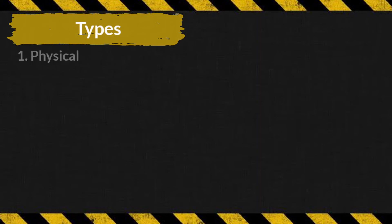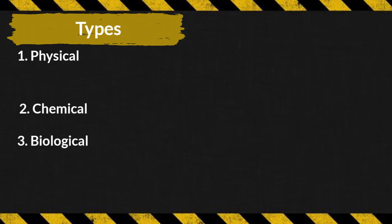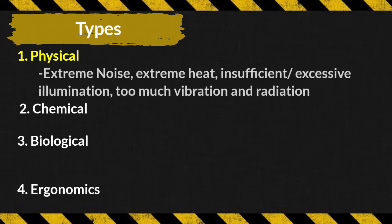We have four main types of hazards. First is physical. Second is chemical. Third is biological. Fourth is ergonomic. Examples of physical hazards are extreme noise, extreme heat, insufficient or excessive illumination, too much vibration, and radiation.